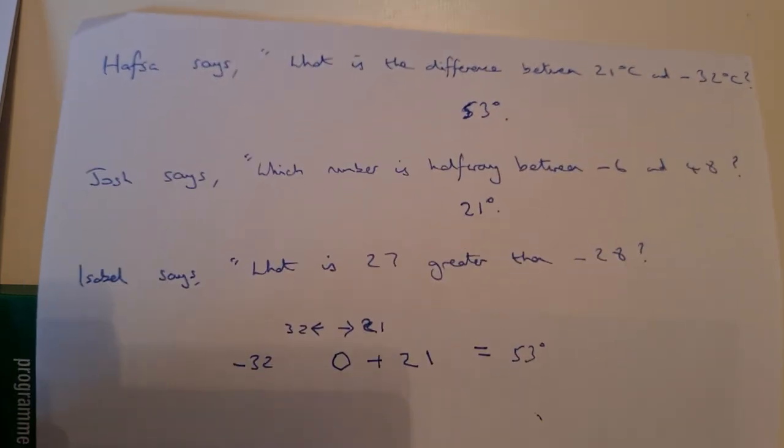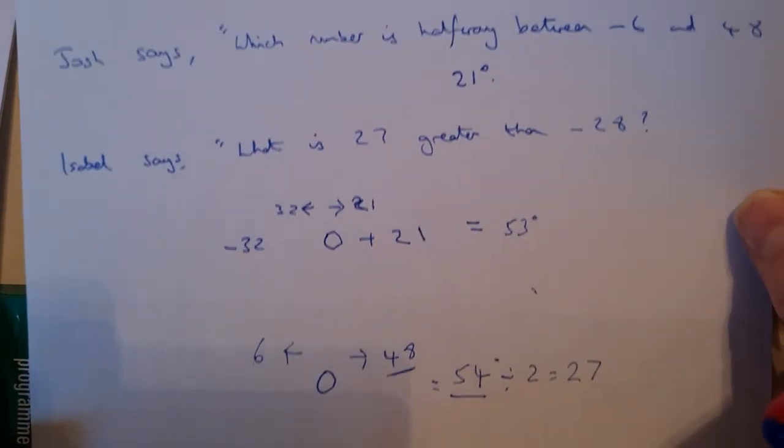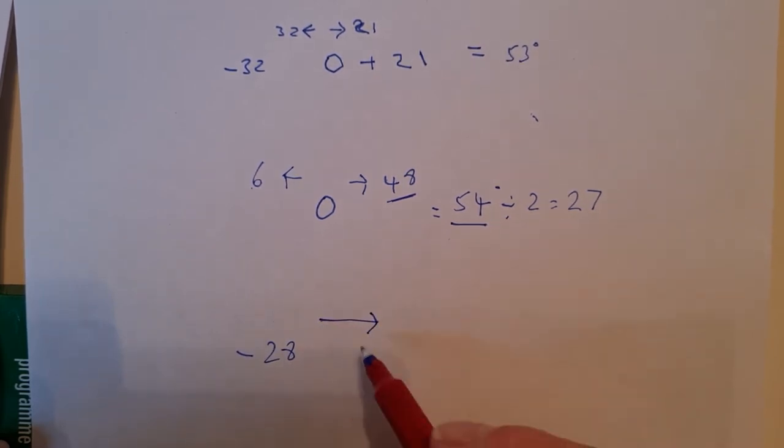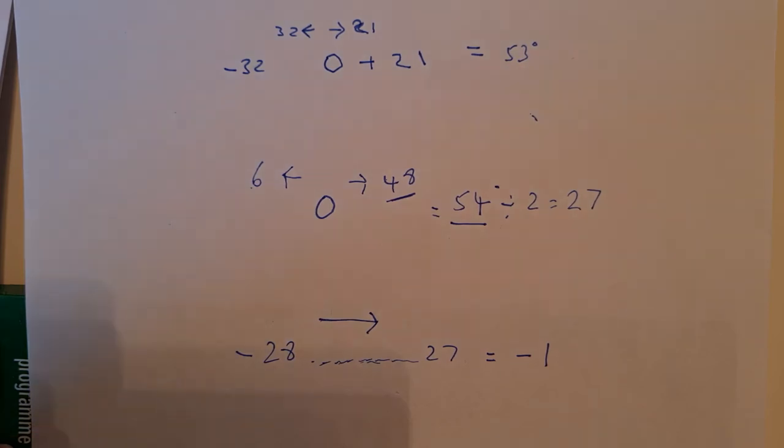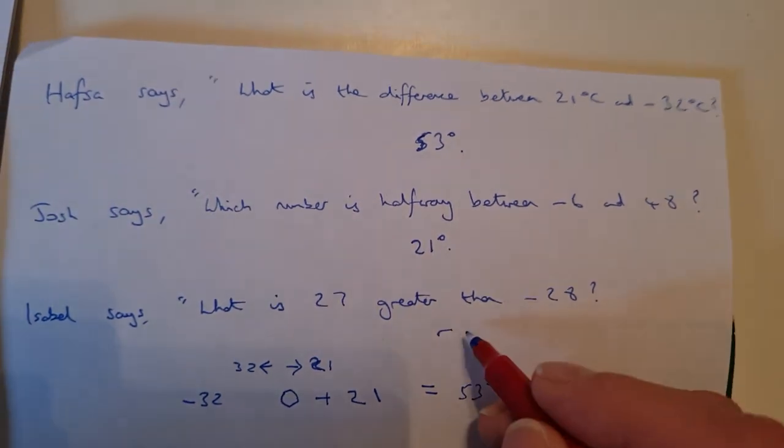Now, Isabel says, what is 27 greater than minus 28? Just move my paper down to do my working out. 27 greater than minus 28. Well, if it's greater, I'm adding, I'm getting bigger, I'm moving to the right. I'm going to count along 27 places. And when I count along 27 places, I get to minus 1. If I'd have counted 28 places, I'd get to zero, because I'm 28 below zero. But I'm only doing 27 places, so I haven't quite got to zero. I would be at minus 1.